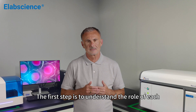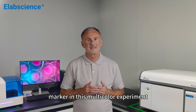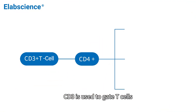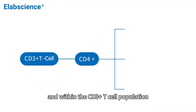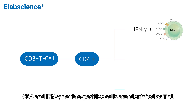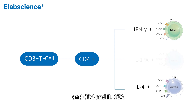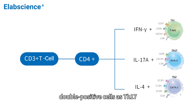The first step is to understand the role of each marker in this multicolor experiment. CD3 is used to gate T cells, and within the CD3+ T cell population, CD4 and IFN-gamma double-positive cells are identified as Th1, CD4 and IL4 double-positive cells as Th2, and CD4 and IL17A double-positive cells as Th17.